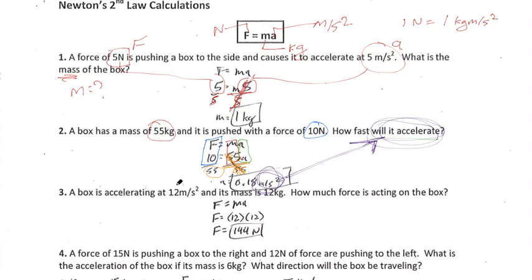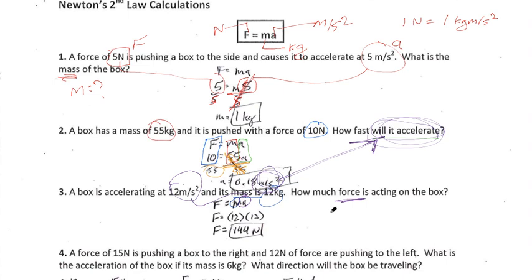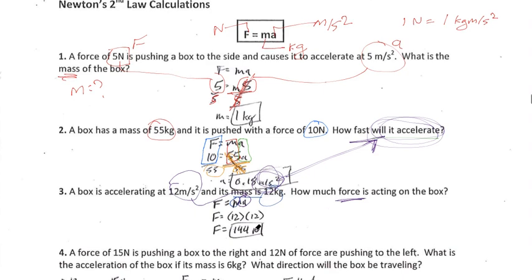Number three: a box is accelerating at 12 meters per second squared, it's got a mass of 12 kilograms. How much force is acting on the box? Well, we know the mass — 12 kilograms. We know the acceleration — 12 meters per second squared. F equals ma relates our acceleration and our mass. We're being asked for a force, so force equals mass times acceleration. Mass of 12, acceleration of 12 — 12 times 12 gives us 144 newtons. Ask yourself: does it make sense that it would be in newtons? We're being asked for something to do with force, and newtons has to do with force. We know we're good to go.